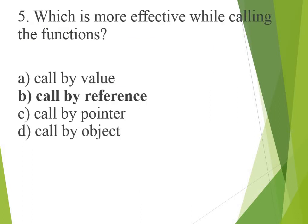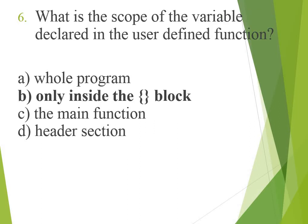Which is more effective while calling the function? Call by reference. What is the scope of a local variable declared in a user-defined function? Only inside the block.